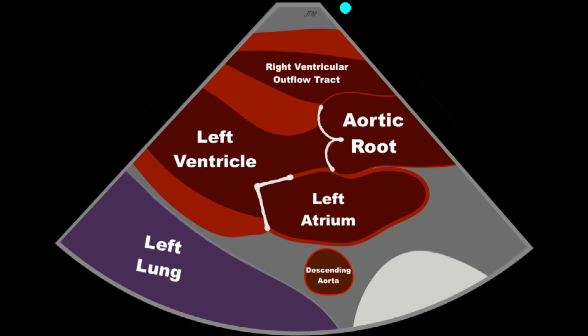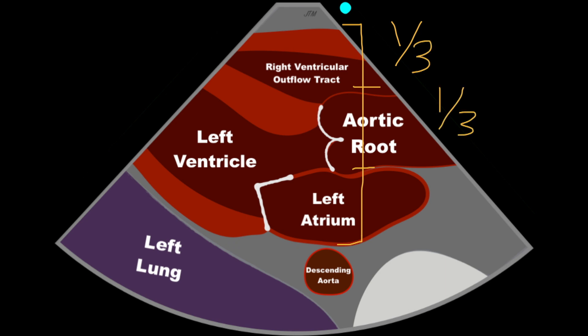One of our rules of thirds is looking in the parasternal long axis at the right ventricular outflow tract, the aortic root, and the left atrium. Together, the three of them form a whole that we're going to consider, and each one of them should take up about a third of the base of the heart.